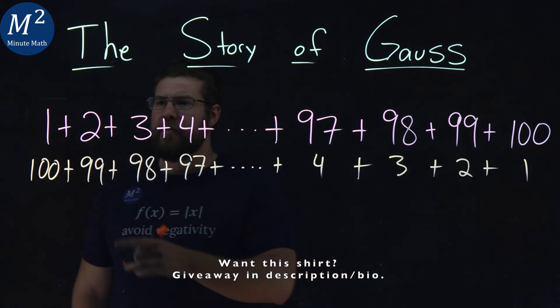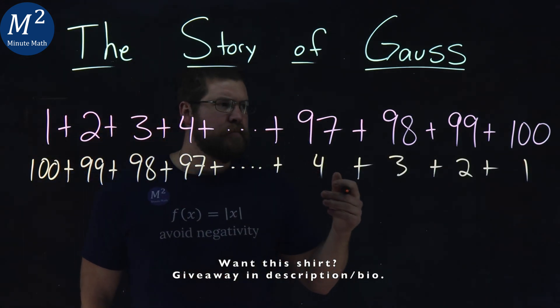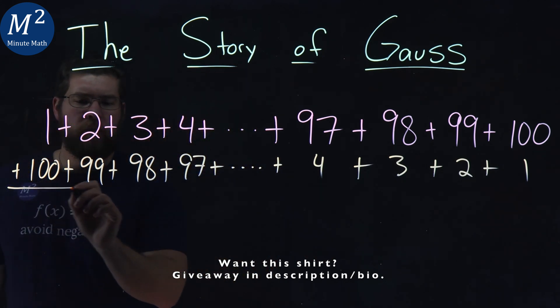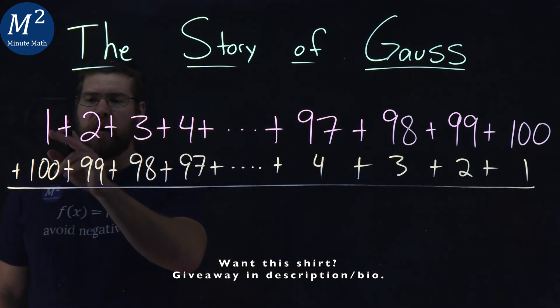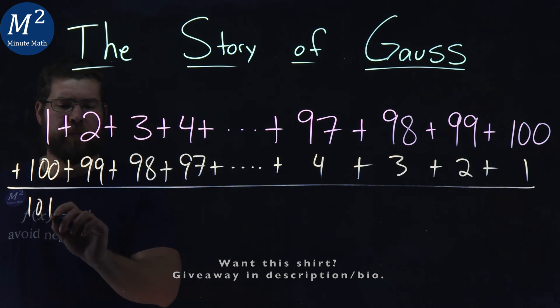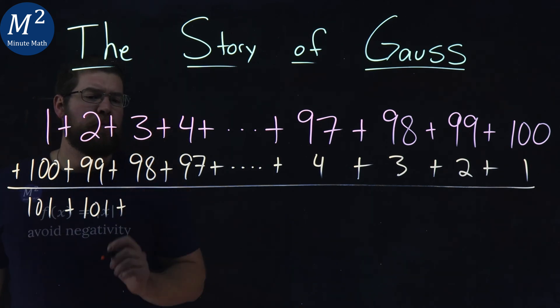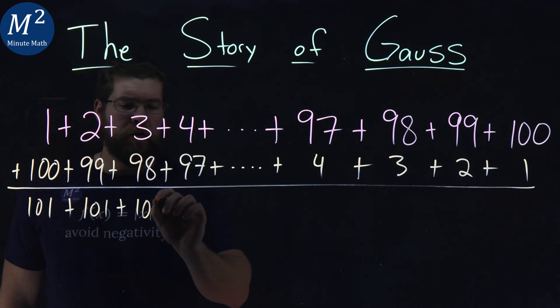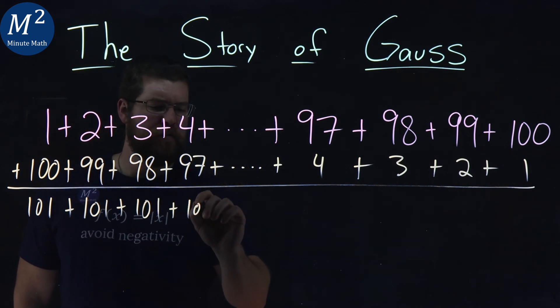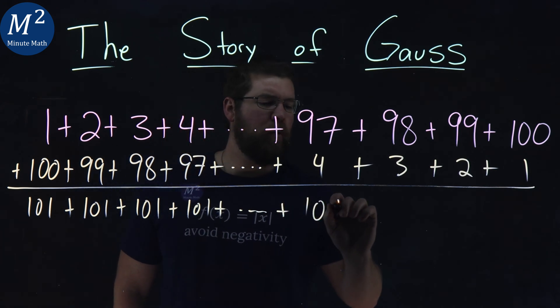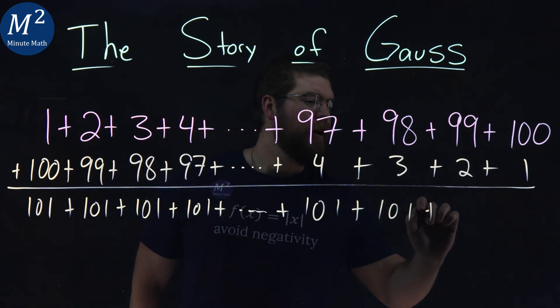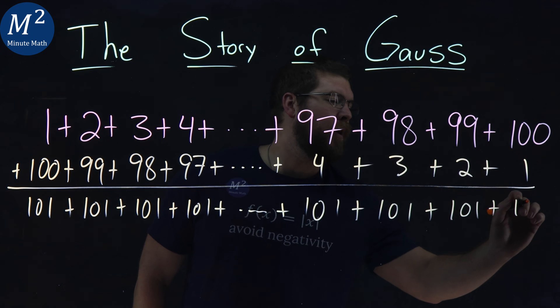And then I did this, added vertically here. So what's the sum of both of those together? Well, we noticed here that 1 plus 100 is 101. 2 plus 99 is also 101. And 3 plus 98 is also 101. And you get the gist, right? We have 101 plus 101 plus 101 plus 101.